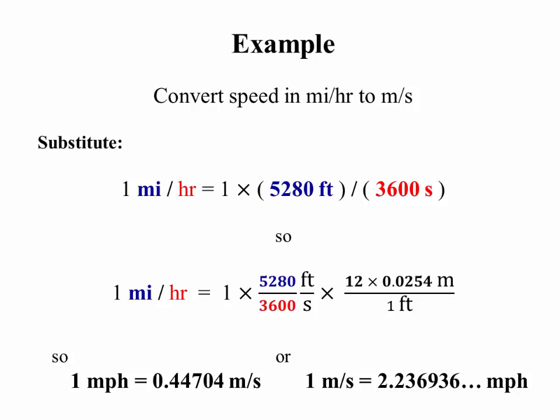But going through feet per second makes it pretty easy to do because you know that one foot is 12 inches and each inch is 2.54 centimeters. So you just get that factor you see at the end, 12 times 0.0254 to convert a foot to meters.